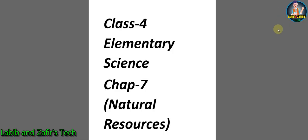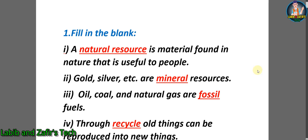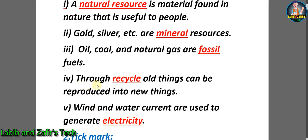Class 4 Elementary Science, Chapter 7: Natural Resources. Filling the blanks — Number 1: A natural resource is a material found in nature that is useful to people. Number 2: Gold, silver, etc. are mineral resources. Number 3: Oil, coal, and natural gas are fossil fuels. Number 4: Through recycling, all things can be reproduced into new things. Number 5: Wind and water current are used to generate electricity.